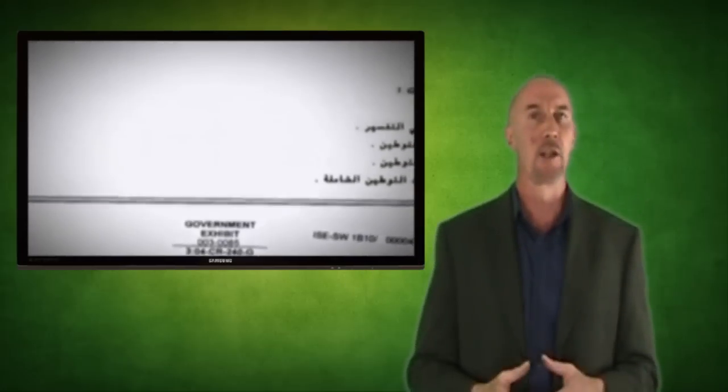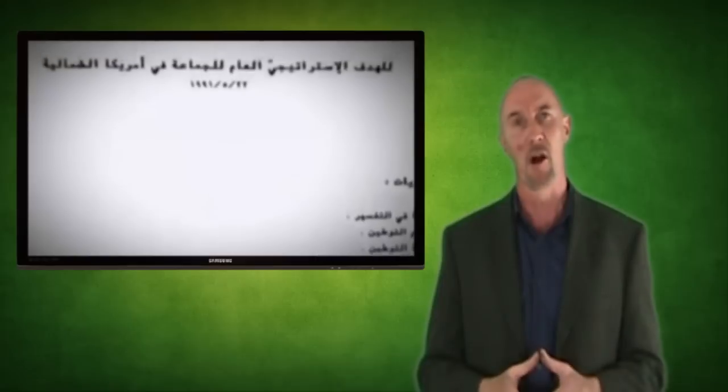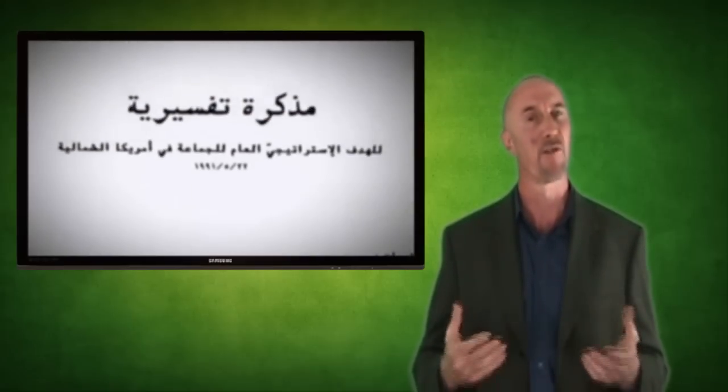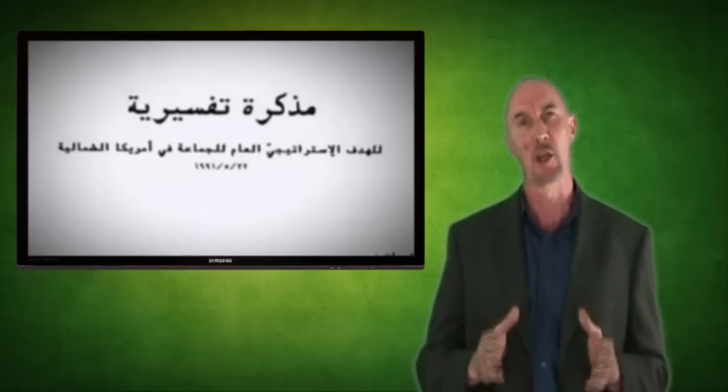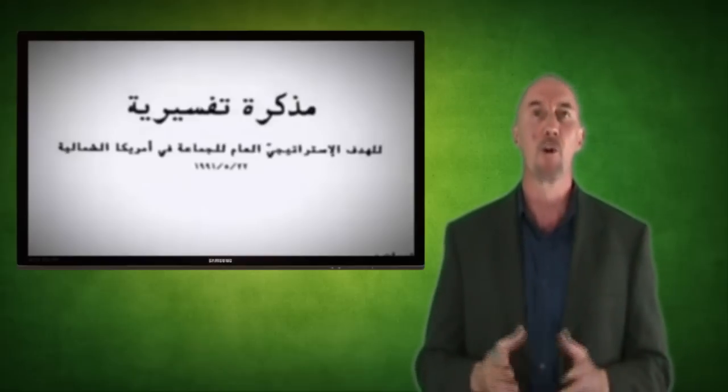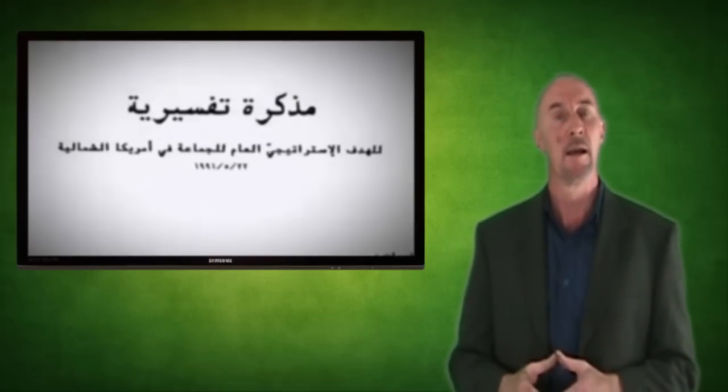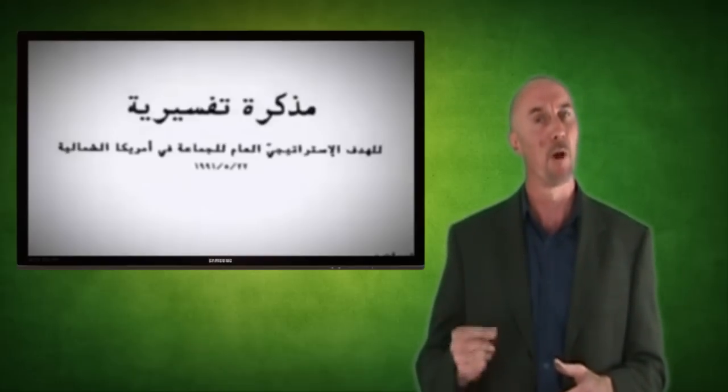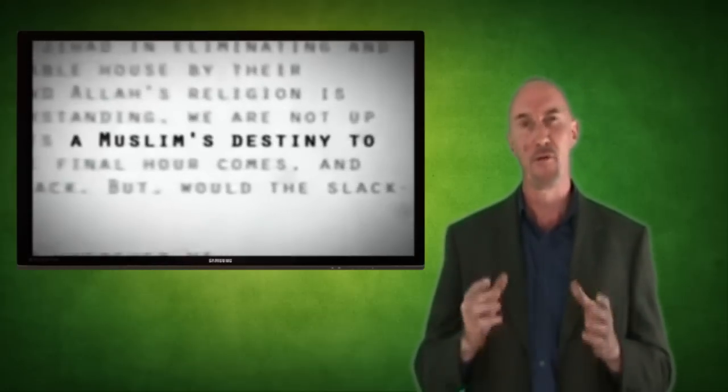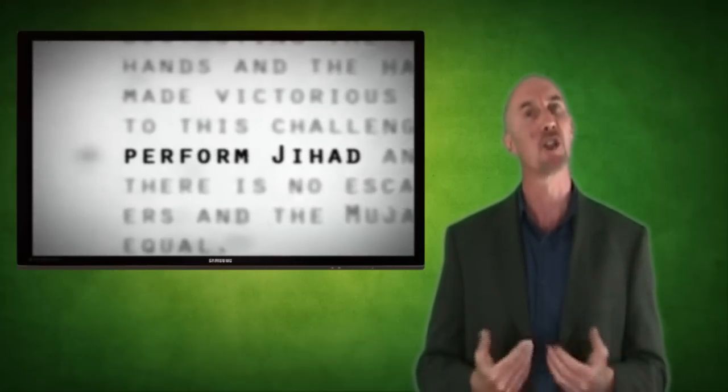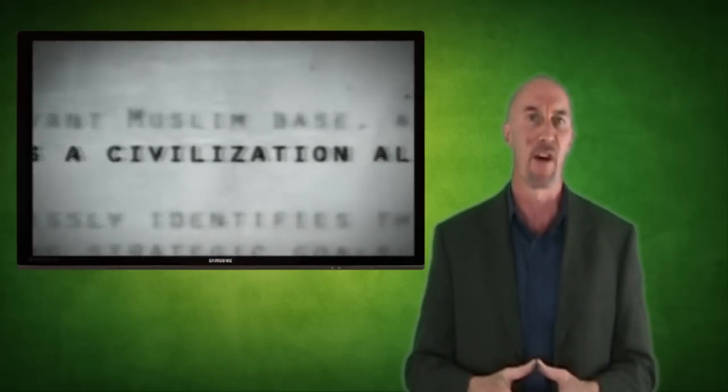Uncovered by the FBI during the Holy Land Foundation trial, America's largest terrorist funding investigation, the document titled An Explanatory Memorandum on the General Strategic Goal for the Group in North America, but known more simply as The Project, and written by Muslim Brotherhood Operative Mohammed Akram, sets out in chilling detail radical Islam's plan to destroy the West from within. And for the first time, it allowed us to openly see the shape and designs of the enemy we face.